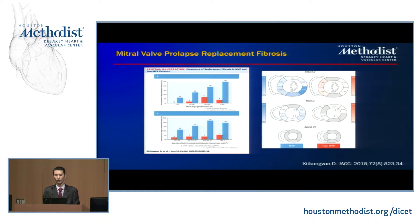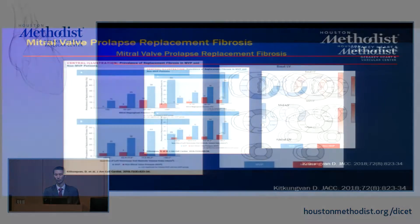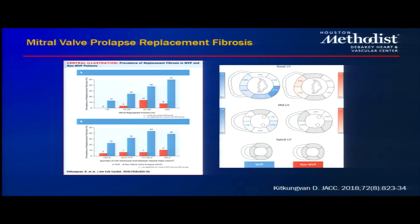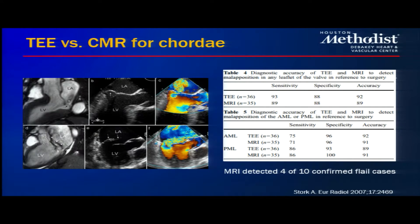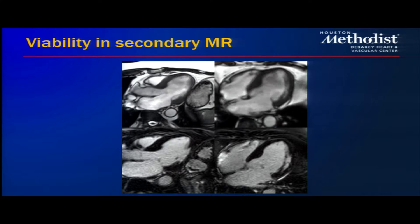As recently published by one of our former graduates, we can also detect myocardial fibrosis — replacement fibrosis or scar tissue — which has a predilection for the lateral wall in mitral valve prolapse, a potential substrate for arrhythmogenic events that is being actively explored. However, we do recognize limitations: for assessing chordae and sub-valvular apparatus, we are inferior to TEE. In one study, CMR identified only 4 out of 10 confirmed flail cases, whereas TEE identified all.